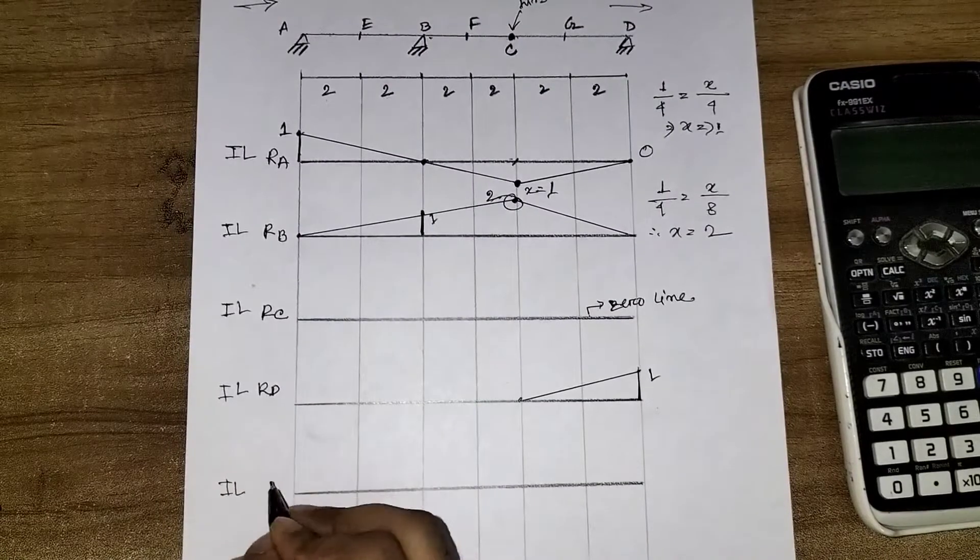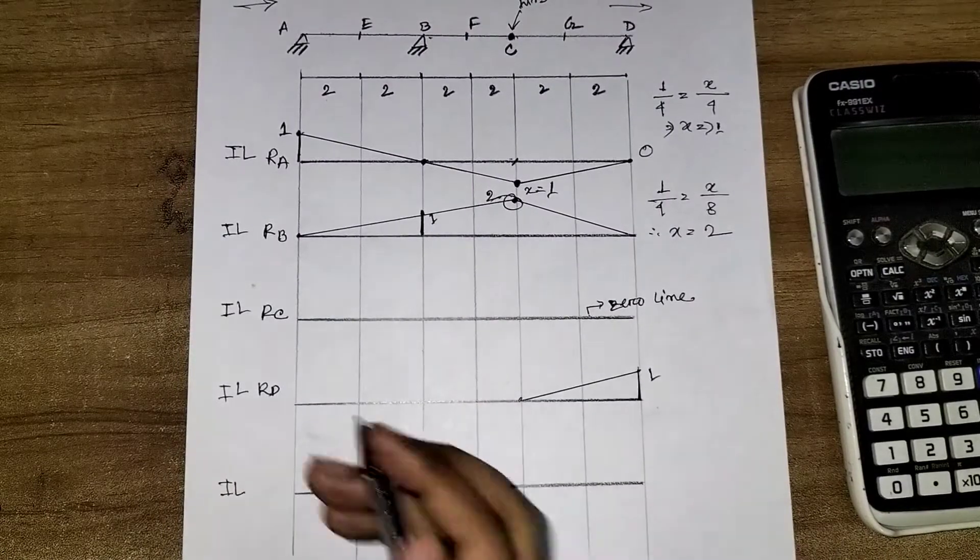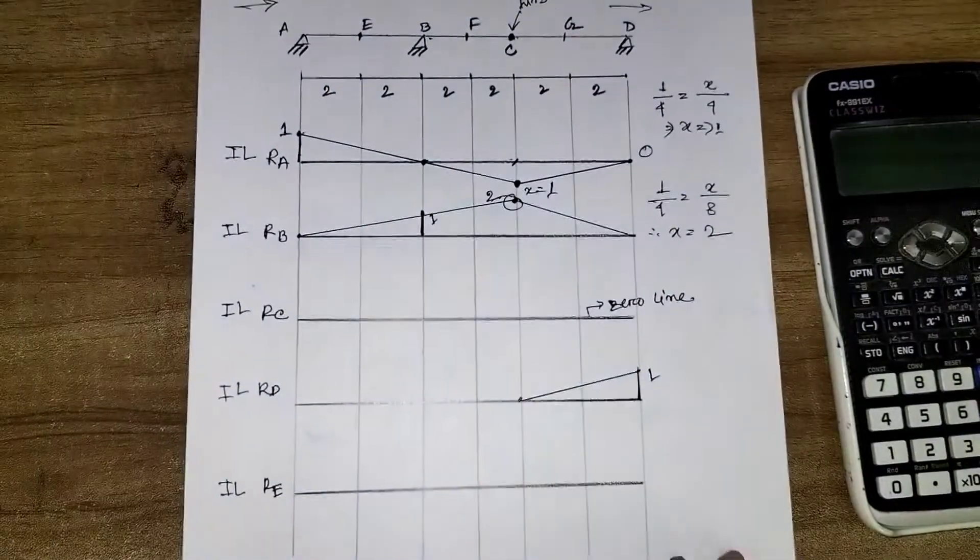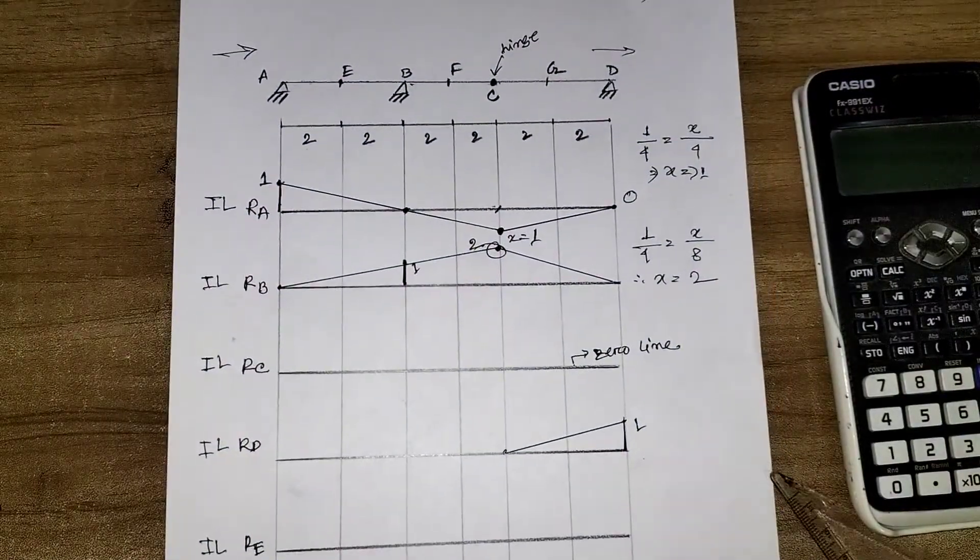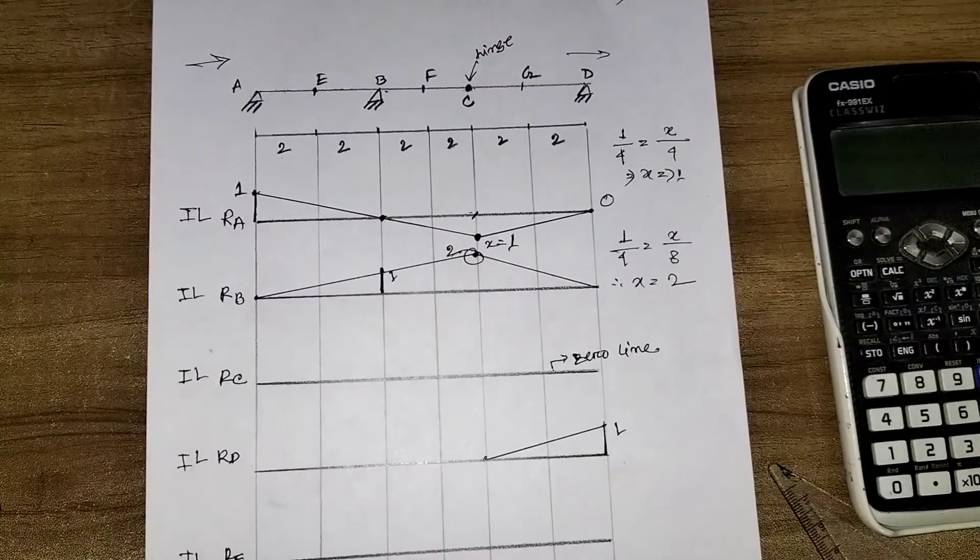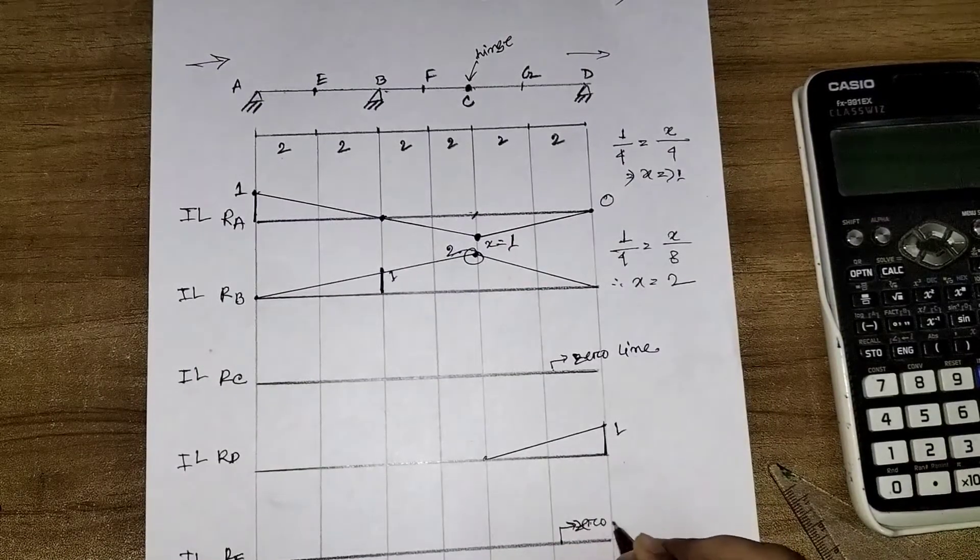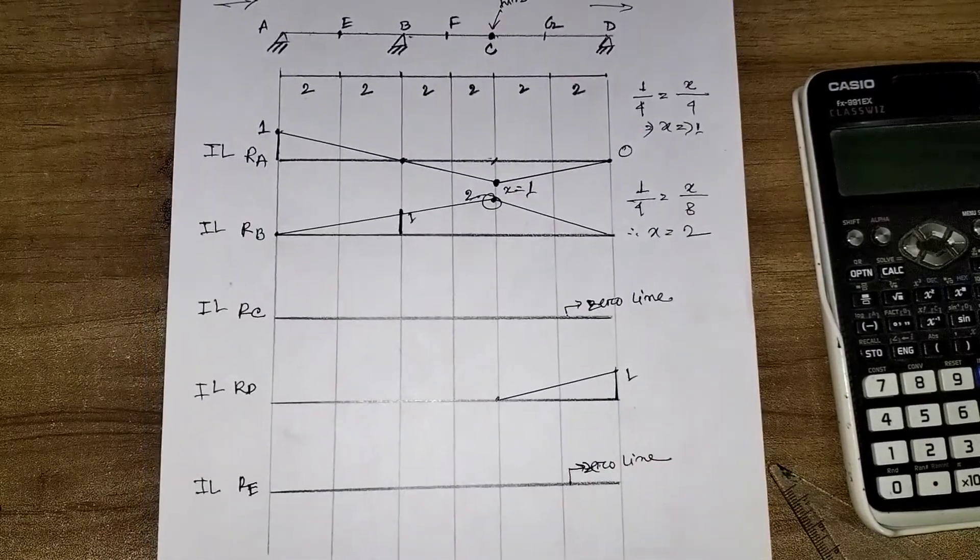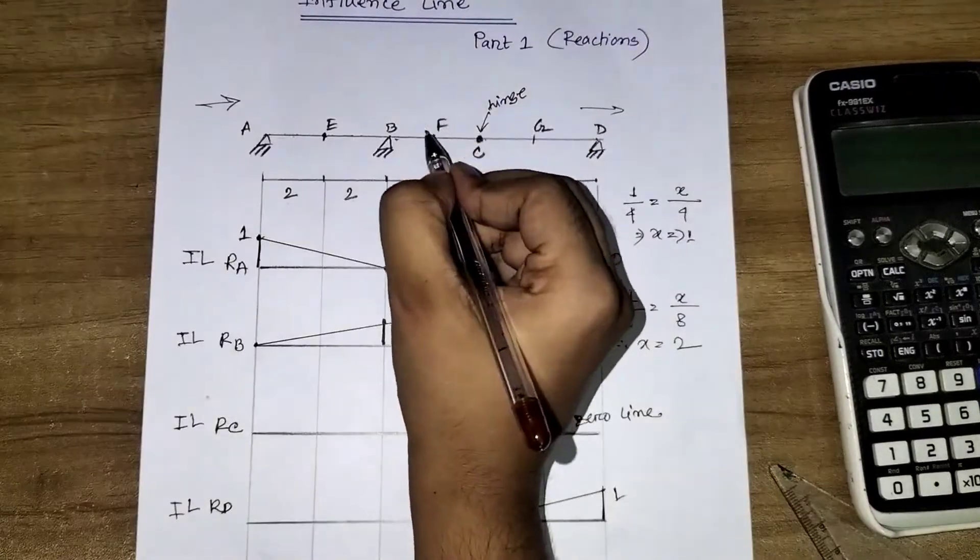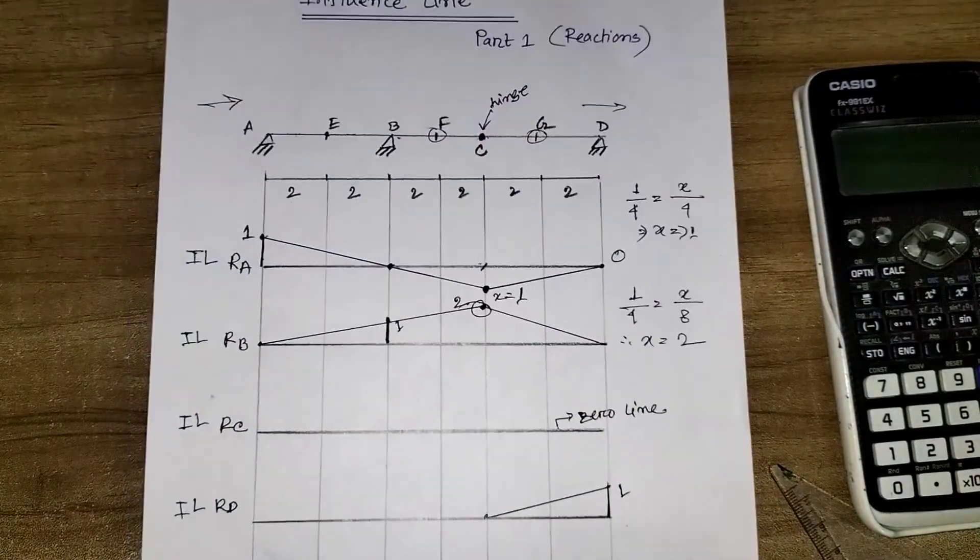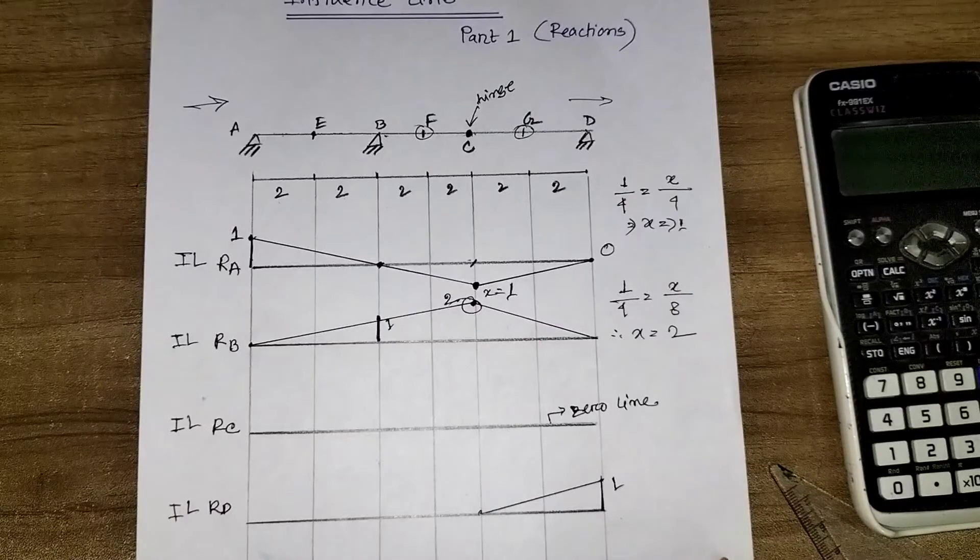So IL for RE, this point. What do you think about this point? RE has no reaction, so this is a zero line. Okay, then likewise RF, RG. These are not support points, so their reaction IL is obviously zero.